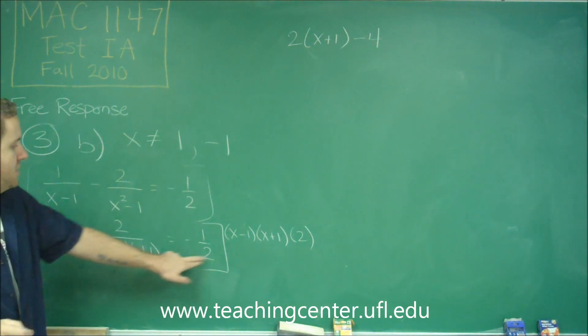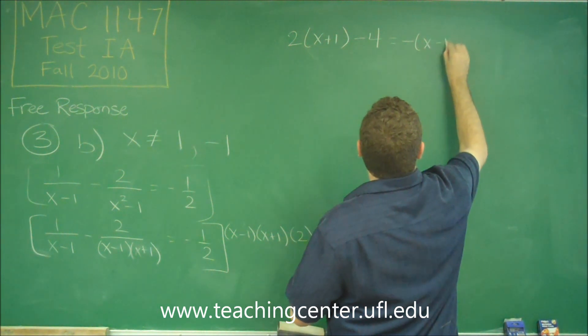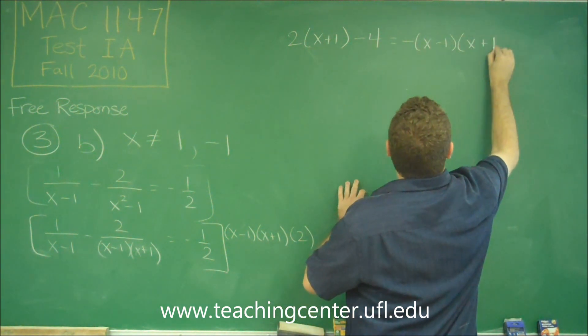And on the right side of the equation, the 2's will cancel out, and we'll just get a negative x minus 1, x plus 1.